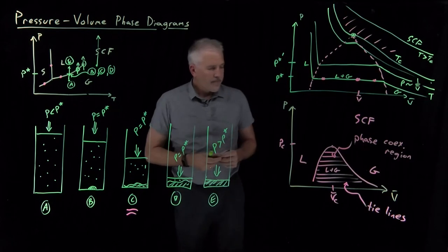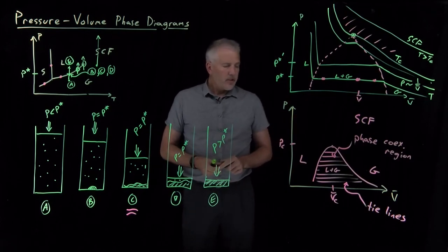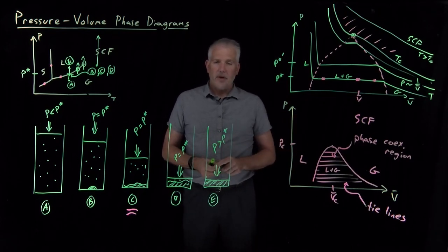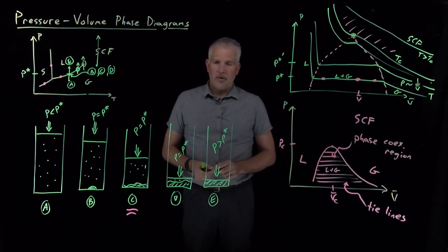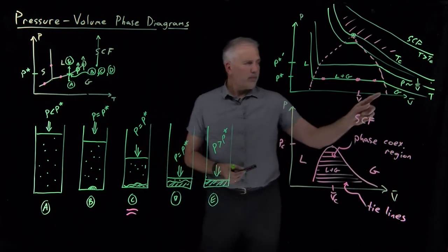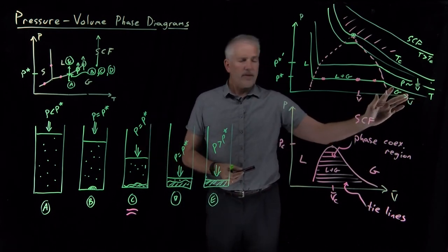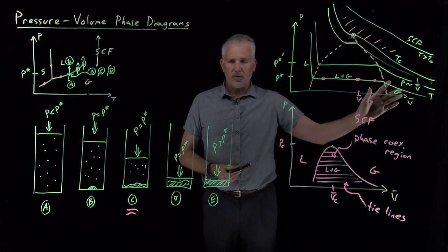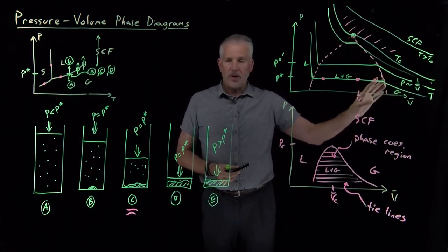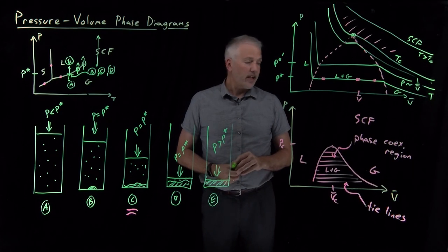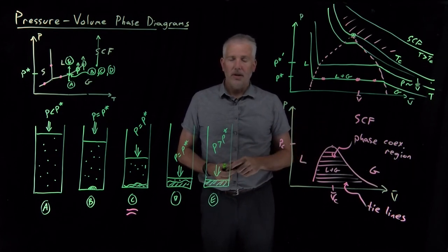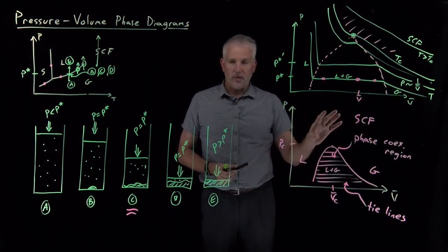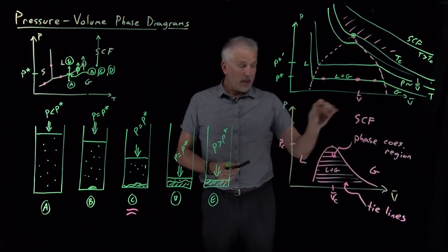That's some details of what these pressure-volume phase diagrams look like. They're qualitatively quite a bit different than a pressure-temperature phase diagram, but they're just as useful under different circumstances. We began by talking about these gases as if they were ideal gases, but of course we have better models — better equations of state for describing gases. It turns out we can learn a fair bit about the phase behavior of gases, liquids, and supercritical fluids if we use better equations of state to describe their behavior.